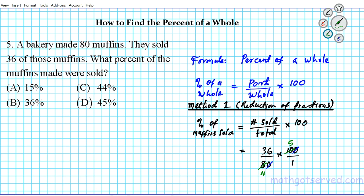4 and 36, do they have anything in common? Absolutely, they have 4 in common. We can divide top and bottom by 4. Divide 4 by 4, that's 1. Divide 36 by 4, that's 9. Nothing else to reduce. Multiply across. 9 times 5 is 45 over 1, which reduces to 45 percent. And there goes your final answer. The answer to number 5 is option letter D.